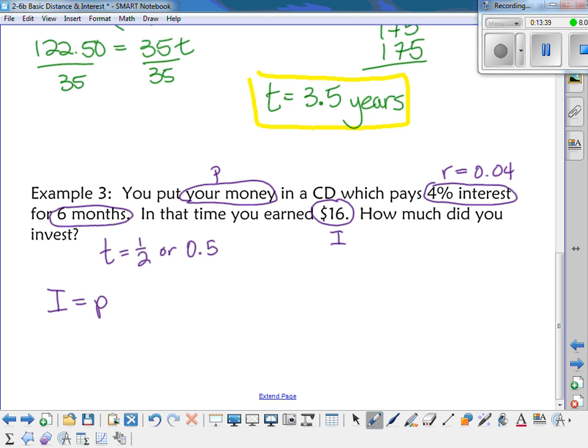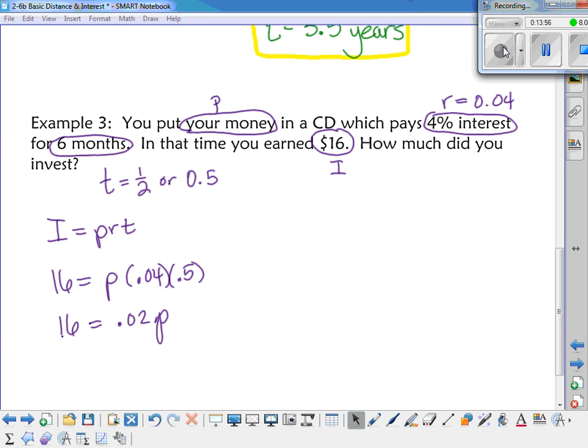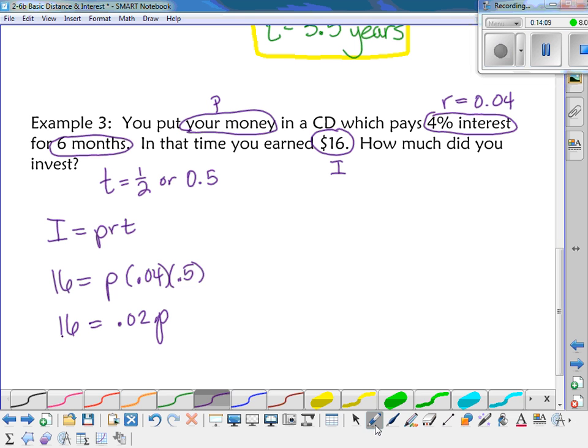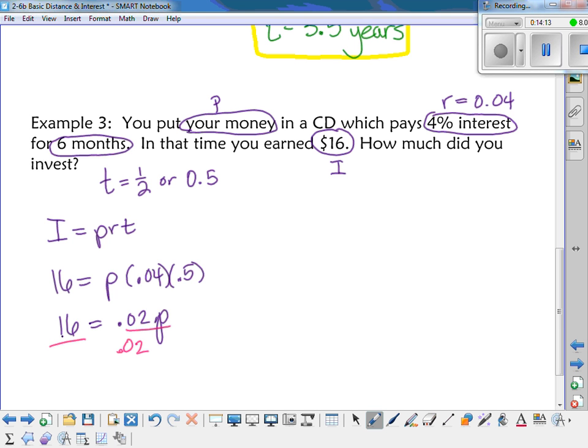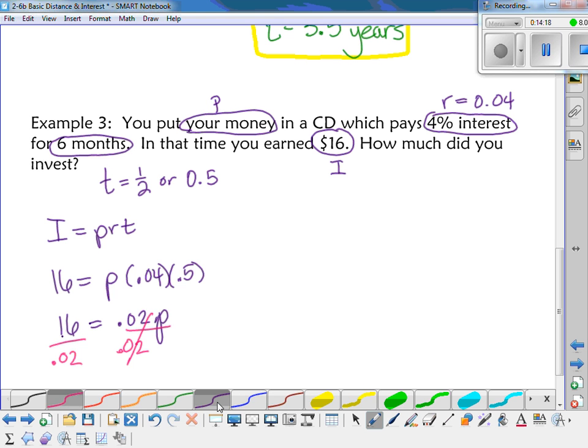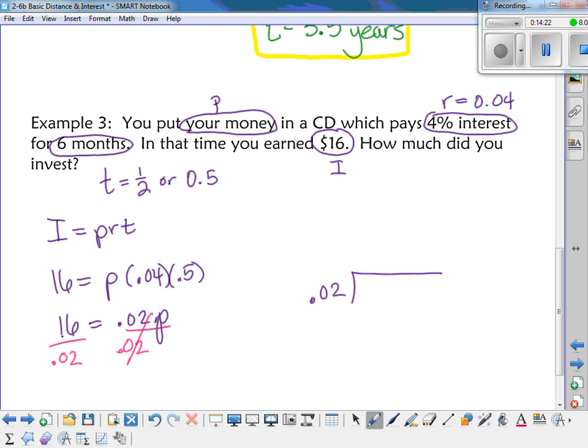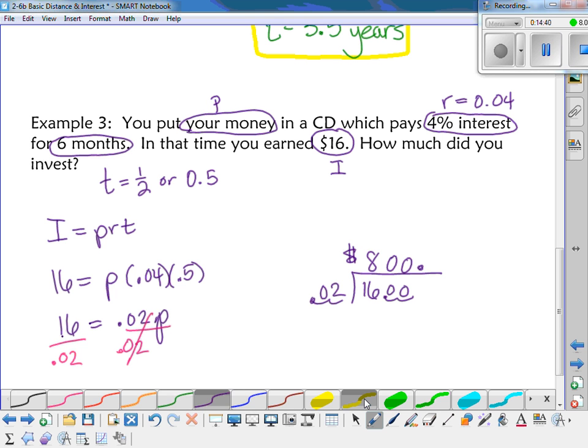So I equals P, R, T. So plug in what you know. Solve for what you don't know. Figure out how much money was put into the CD. So go ahead and finish off the problems on your papers. So when you plug in 0.04 for the interest rate and 0.5 for the time, multiply those together, you get 0.02. So 16 is equal to 0.02p, and then I just have to divide both sides by 0.02. And so when you divide 0.02 into 16, when you have a decimal, you have to move it over. So how many times does 2 go in to 16? Eight times. And then we've got the two zeros to fill in. So $800 is what was invested in the certificate of deposit.